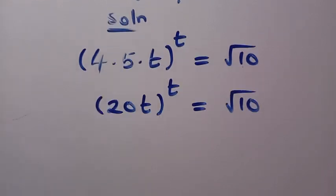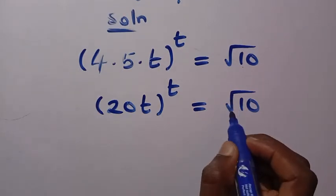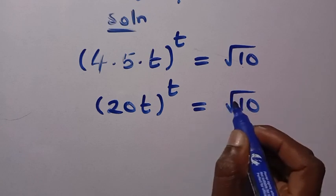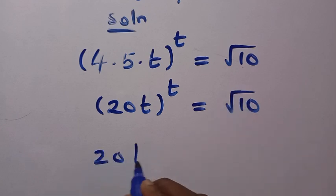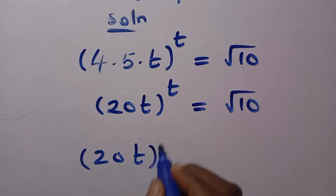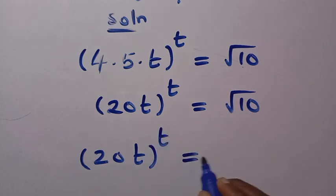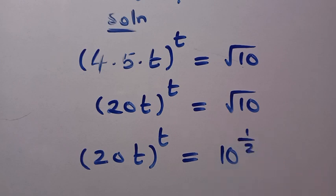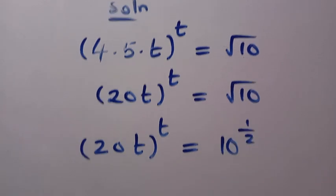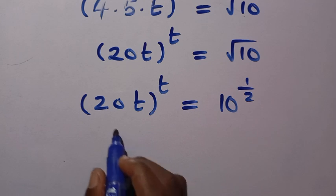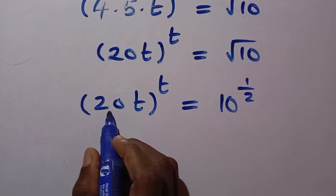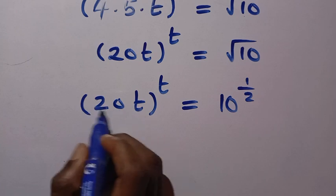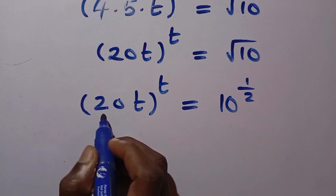The square root of 10 is the same as 10 raised to the power of 1 over 2. So we now have 20t to the power of t equals 10 raised to the power of 1 over 2. In the next step, we raise both sides of the equation by the coefficient of t inside the bracket, which is 20.